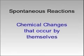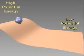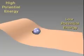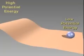Spontaneous reactions occur as soon as two chemicals are combined. Like a ball rolling from the top of a hill, the reactants start at a high potential energy and the products are at a lower potential energy.